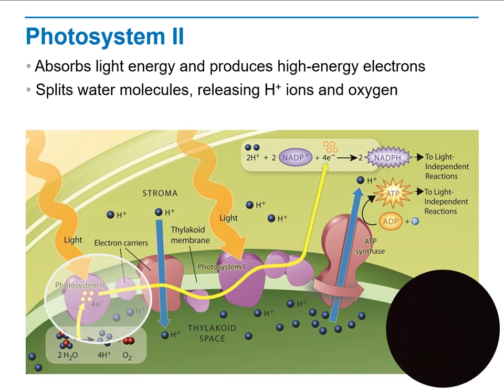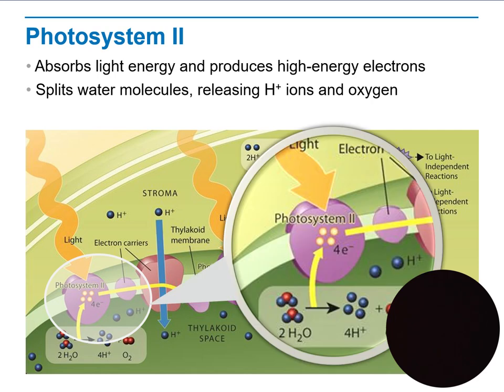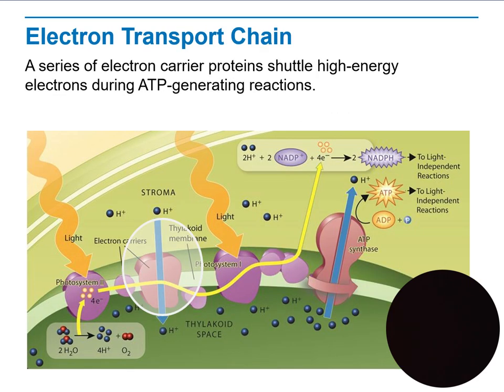In photosystem II, light energy is absorbed by electrons in the pigments found within the photosystem, increasing the electrons' energy level. These high-energy electrons absorb light energy, split the water molecules, and release hydrogen ions that are used in the conversion of NADP+ along with oxygen as a byproduct. The electron transport chain — a series of electron carrier proteins — uses these high-energy electrons during ATP generation reactions.